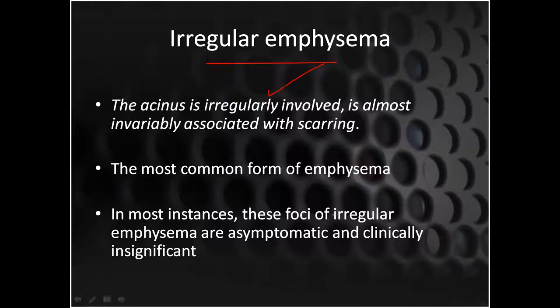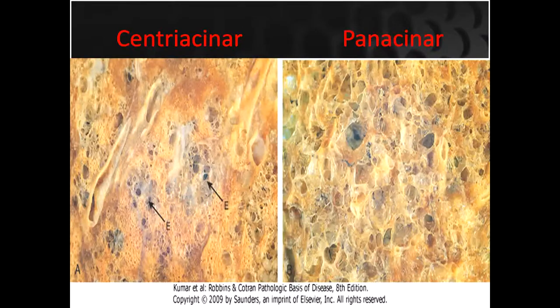The last form is irregular emphysema, where the acinus is irregularly involved, invariably associated with scarring. It is the most common form of emphysema after centriacenar emphysema. In most instances, irregular emphysemas are asymptomatic and clinically insignificant, and are typically reported at autopsy.